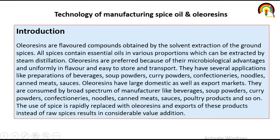Technology of manufacturing spice oil and oleoresin. Oleoresin are flavored compounds obtained by the solvent extraction of ground spices. All spices contain essential oil in various proportions, which can be extracted by steam distillation. Oleoresin are preferred because of their microbiological advantage and uniformity in flavor, and easy to store and transport.